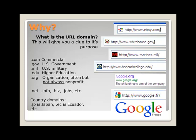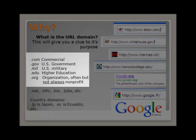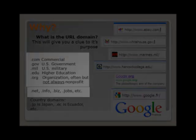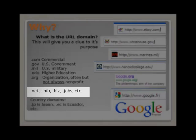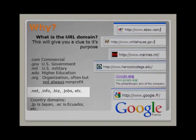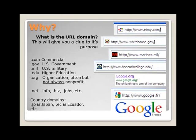We're all familiar with commercial or .com websites. eBay and Amazon are both commercial sites. But there are also government, military, educational, and organizational sites. As more websites are published, more domain names are popping up. New ones include .net, .info, .biz, and .jobs. Another thing to look out for is country name abbreviations. If the URL ends in two letters, it probably belongs to a different country.